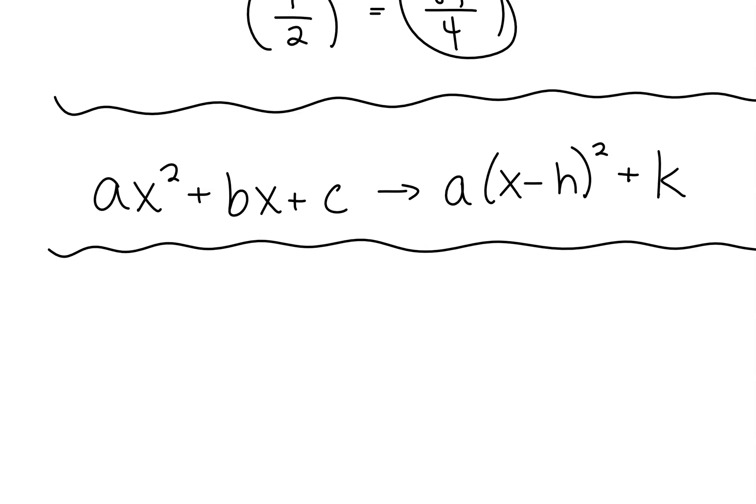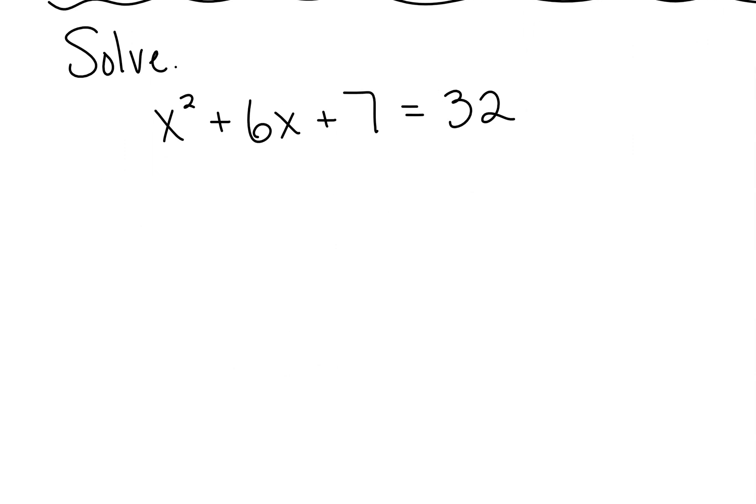So what we're going to use it for today is solving. That's what we're going to use it for. So we're going to have problems that say solve, and it might look like x squared plus 6x plus 7 equals 32. Okay, here's our setup. If we want to use this completing the square method, the first thing we have to do is this over here is not a perfect trinomial, so we're going to get rid of this 7 and put in what we want to make this side a perfect trinomial. So the first thing we'll do is we'll subtract that 7, and then we're going to leave a space for what we want to add.